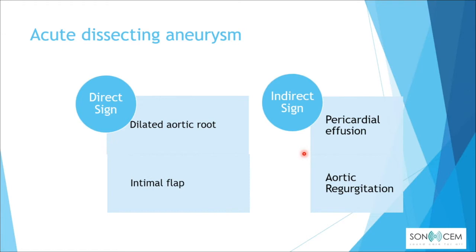For acute dissecting aneurysm, there are direct and indirect signs. Direct signs include a dilated aortic root and an intimal flap. Indirect signs include pericardial effusion and, on color Doppler, aortic regurgitation.